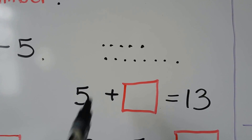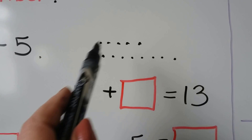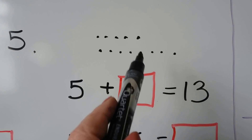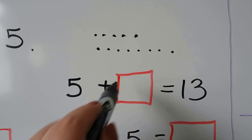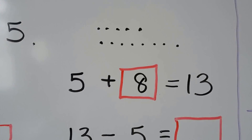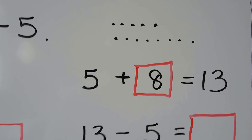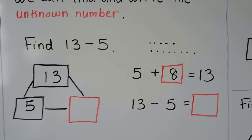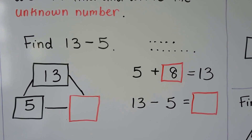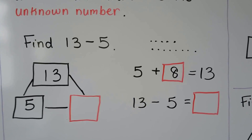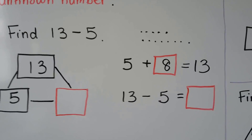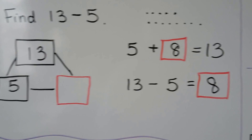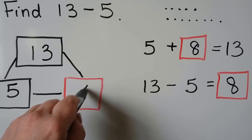How many dots did we have to make? Here's our original 5. We had to make 1, 2, 3, 4, 5, 6, 7, 8. We had to make 8 dots to have 13 dots. So 5 plus 8 is equal to 13. That means 13 minus 5 is equal to 8. We found our missing number — the unknown number is 8.